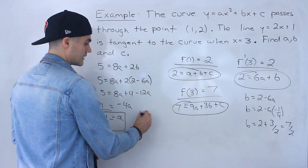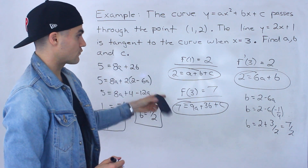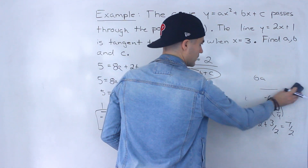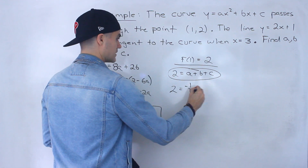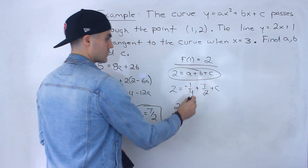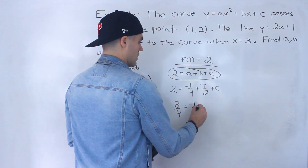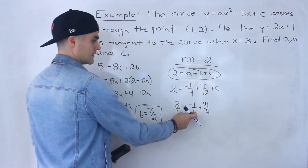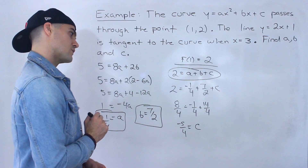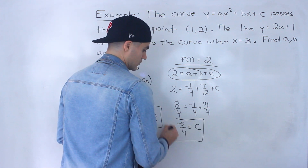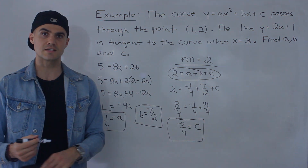Now plugging a and b into the first equation — 2 equals negative 1 over 4 plus 7 over 2 plus c — converting to a common denominator of 4 gives 2 equals negative 1 over 4 plus 14 over 4 plus c, so c equals negative 5 over 4. The final answers are: a equals negative 1 over 4, b equals 7 over 2, and c equals negative 5 over 4.